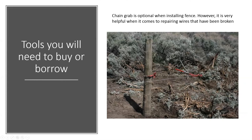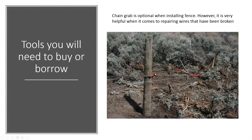A chain grab is an optional but useful tool that can be used as an anchor to a post, or to take two ends of separate wire and pull them together to splice them or install a strainer. In sawing fence you have strainers, and if you have a break and you're pulling the wire together — especially in a long run where the wire is going to shrink back — the chain grab is pretty much necessary.